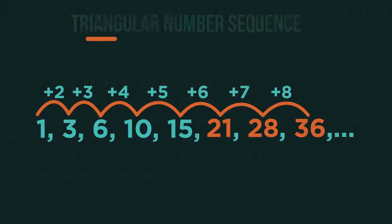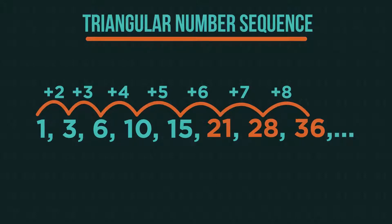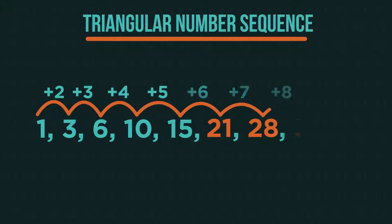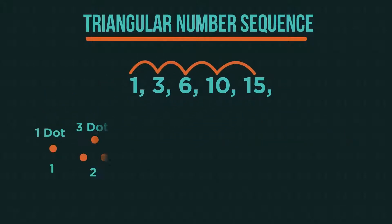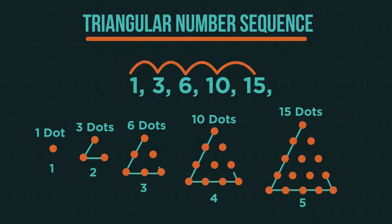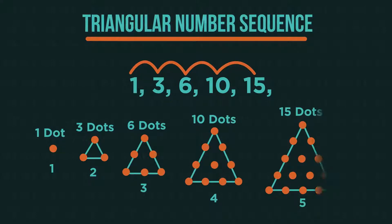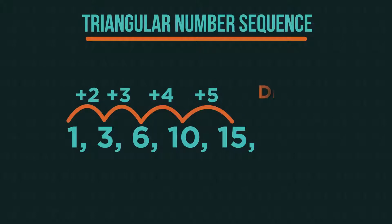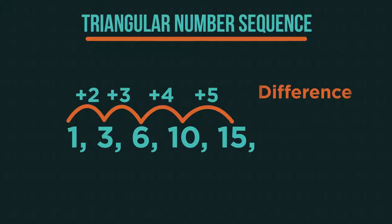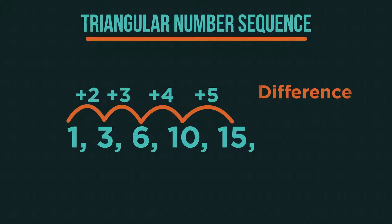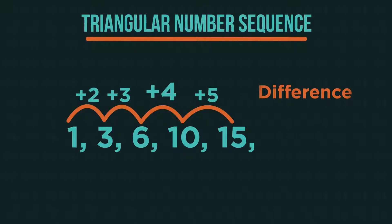These are the triangular numbers or the triangular number sequence. The sequence comes from the pattern of dots needed to make a triangle. They don't have a common difference. The difference changes each time. You add 2, then you add 3, then 4, then 5.